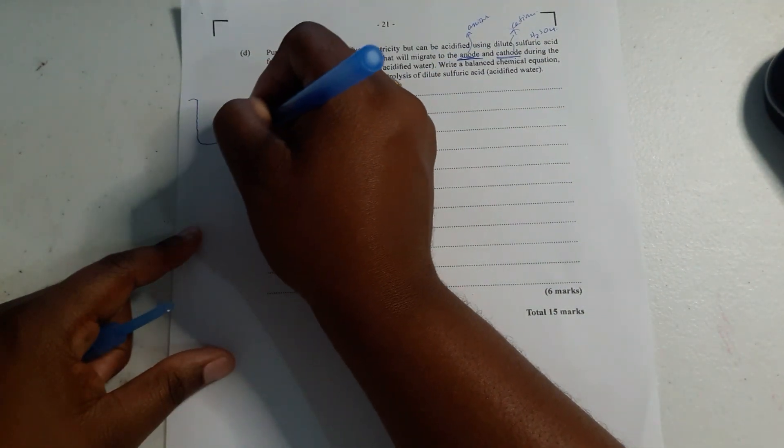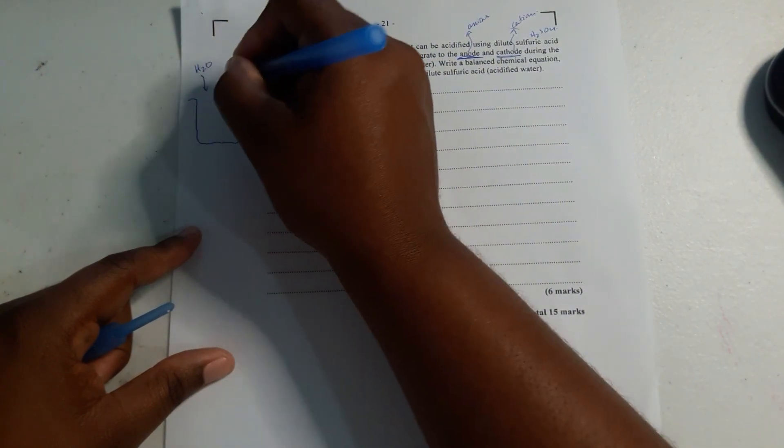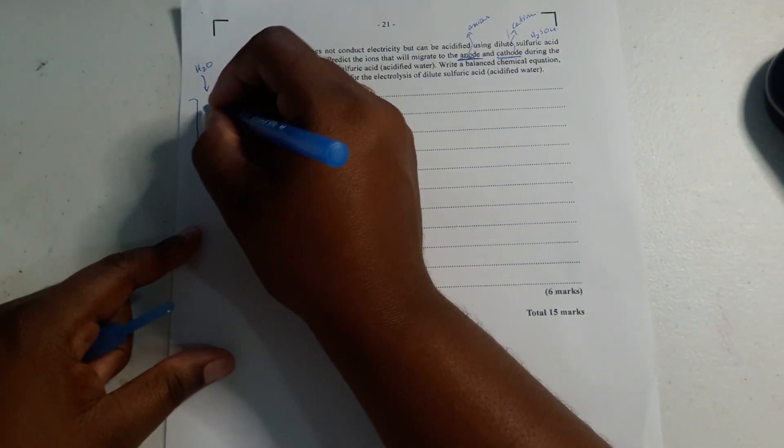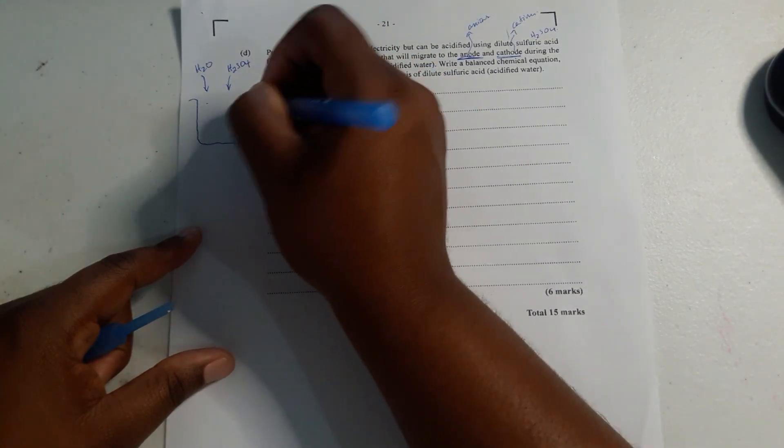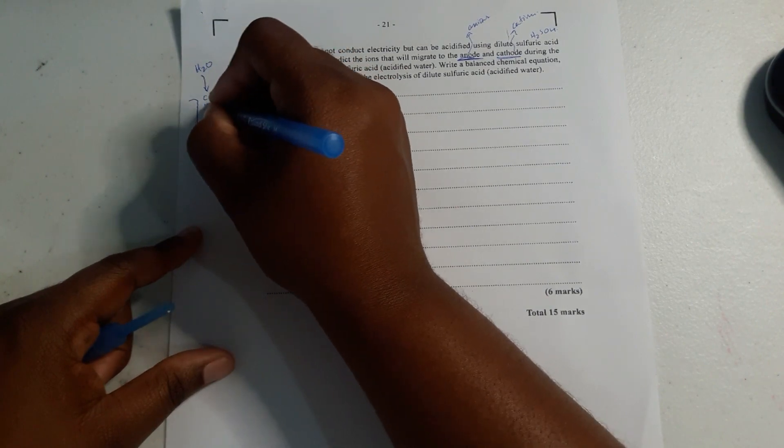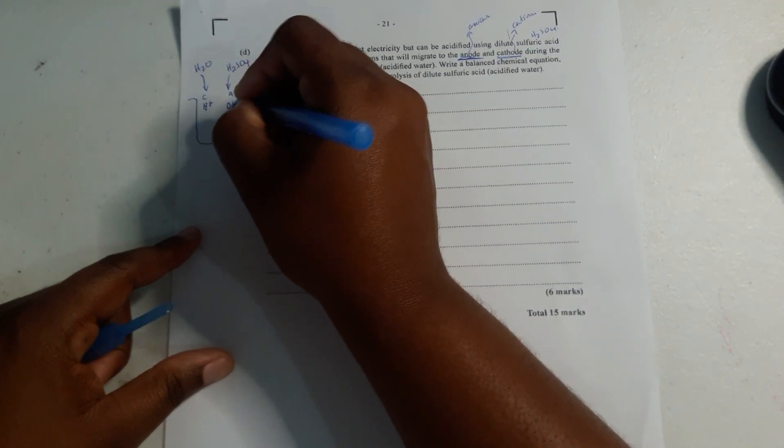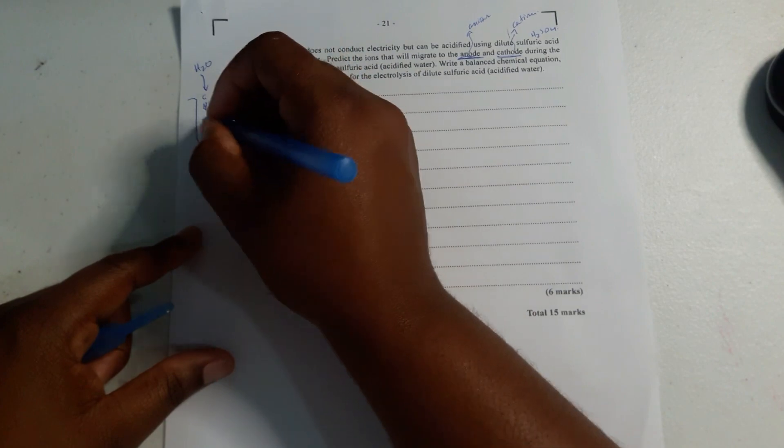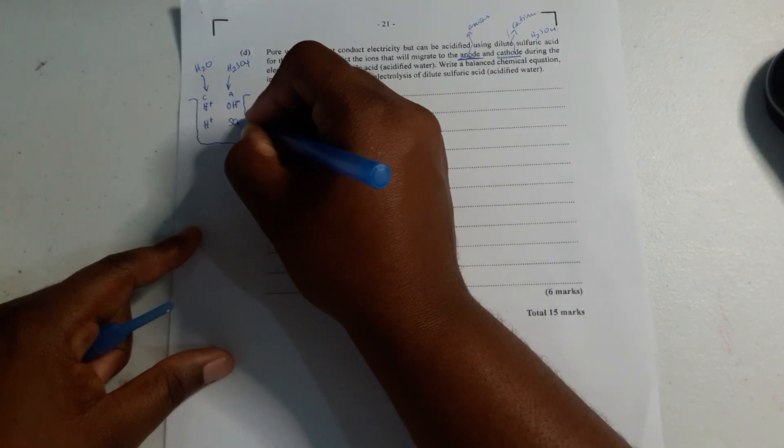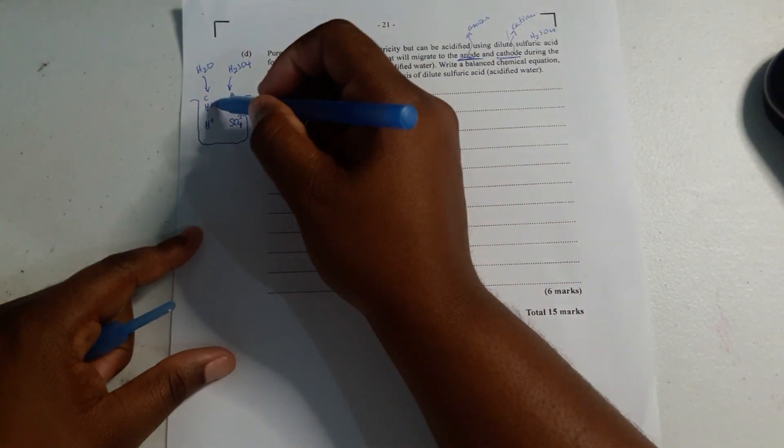So what I usually tell my students is to draw a beaker and put the ions that it contains. So we know in this beaker we have water and we have sulfuric acid H2SO4. What ions make up water? I usually put the cations on one side and the anions on one side. What cation makes up water? Hydrogen ion. What anion makes up water? The hydroxide anion. What cation makes up sulfuric acid? Hydrogen. And what anion makes up sulfuric acid? Sulfate ion.